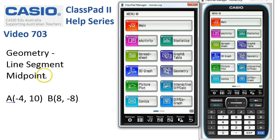Geometry, and we're going to try to find the midpoint of a line segment joining A at negative 4, 10 to B at 8, negative 8.